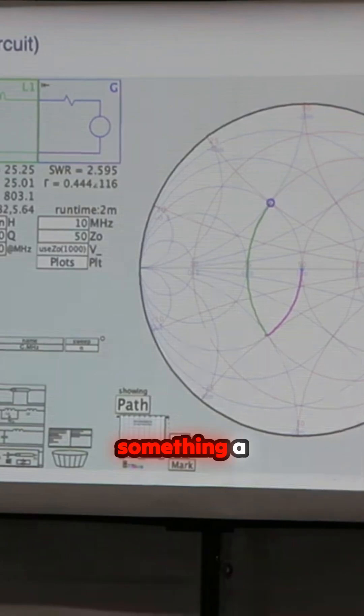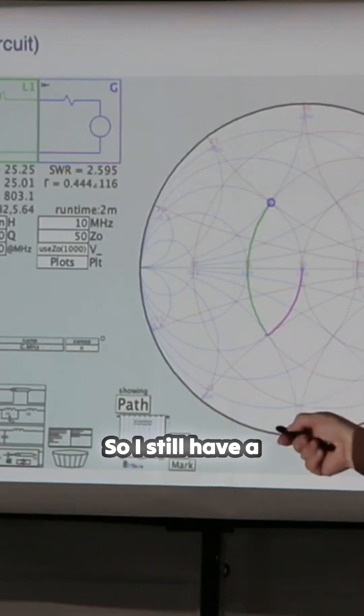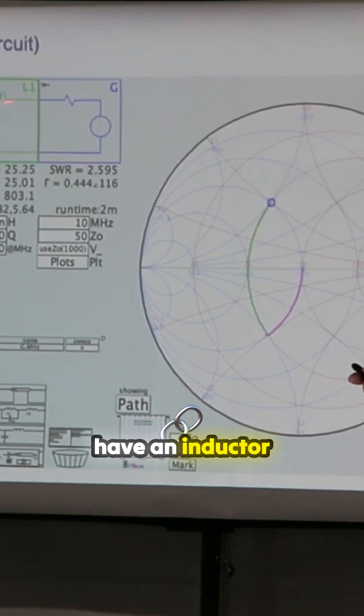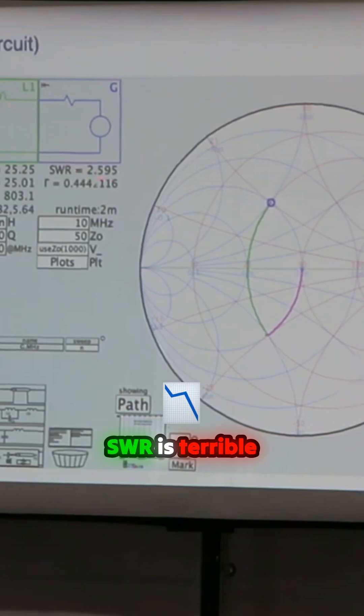Now we're getting to something a little more exciting. So now I'm building an antenna tuner. So I still have a 50 ohm load. I have a capacitor in shunt or parallel and I have an inductor in series and my SWR is terrible.